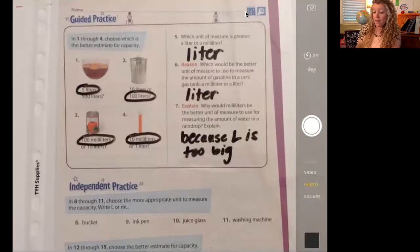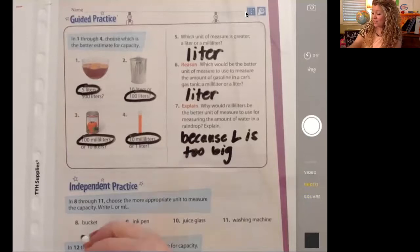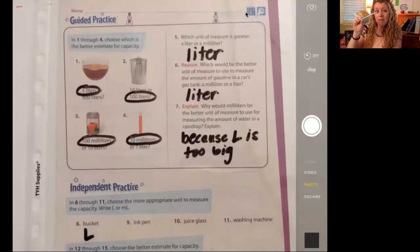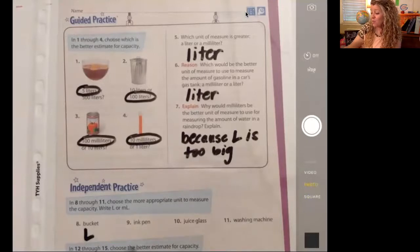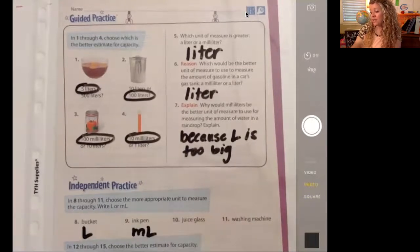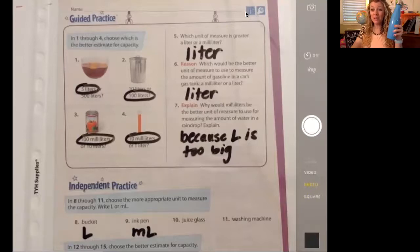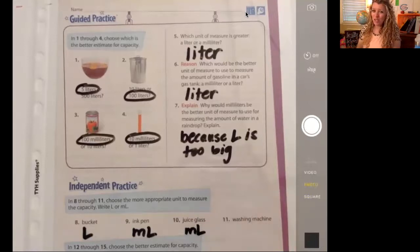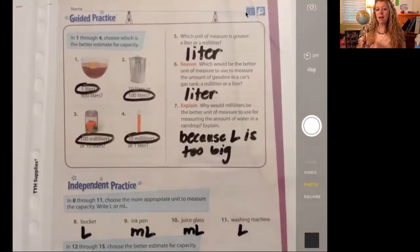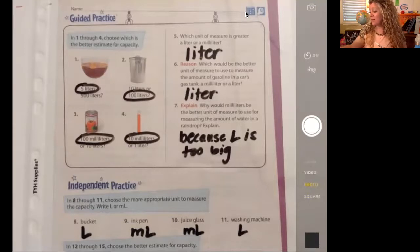So choose what would be a more appropriate unit to measure the capacity. Write L or ML for liter or milliliter. A bucket. If we have a bucket full of water, would we use liters or milliliters? If you said liters, you're exactly right. An ink pen. Think about a little ink pen and how much it would hold inside there. You would want to use milliliters to measure that. A juice glass. A juice glass is a really small glass. Like those tiny little glasses they give you of juice. Maybe if you're at a restaurant or something, they bring on a juice glass. You would not want to measure it in milliliter. I mean in liters because this is too big. So you would use milliliters. And then a washing machine. We sure would not want to use this to fill up a washing machine. No way. So we would use liters to measure the amount that a washing machine will hold.